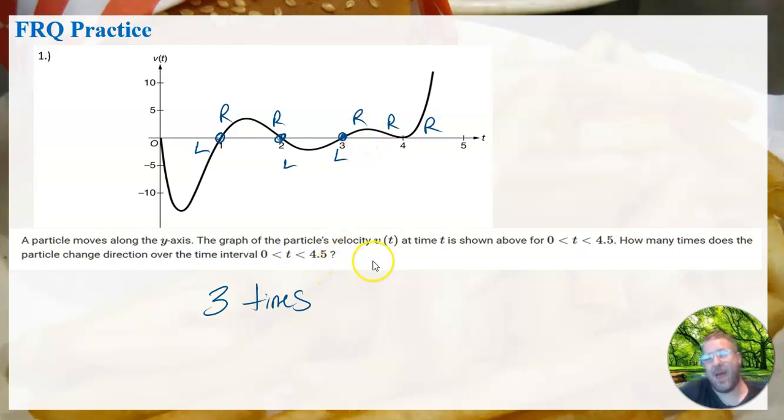All right, first, a good warm-up here. We're given a graph and asked to find how many times the particle changes direction. Now remember, we've talked about direction—the velocity is positive when it's moving right and negative when it's moving left. This is a velocity graph. Very important. Anytime it's above the x-axis, that means it's moving right. Anytime the graph is below the x-axis, that means negative velocity, so it's moving left.